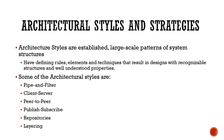First of all, let's talk about what is architectural style. When we talk about the design phase, there are many predefined styles. Architectural styles are established large-scale patterns of system architectures. They have defining rules, elements and techniques that result in designs with recognizable structures and understood properties. So if you already have a design, if you want to create a program or software, then you will use the architectural style.